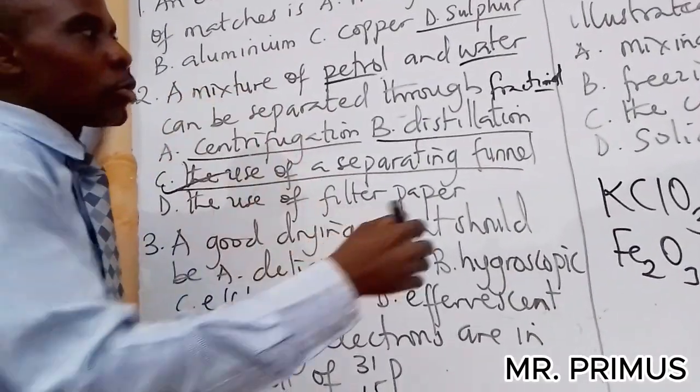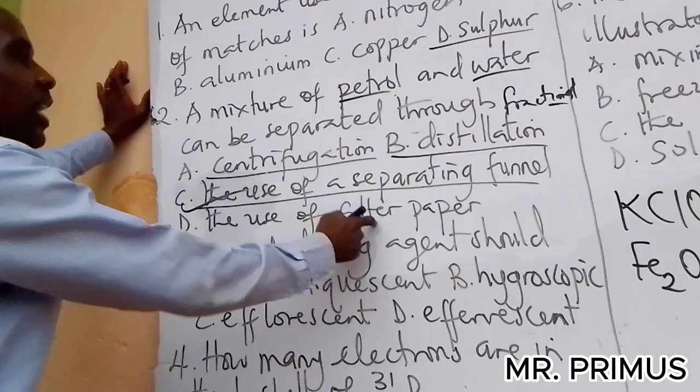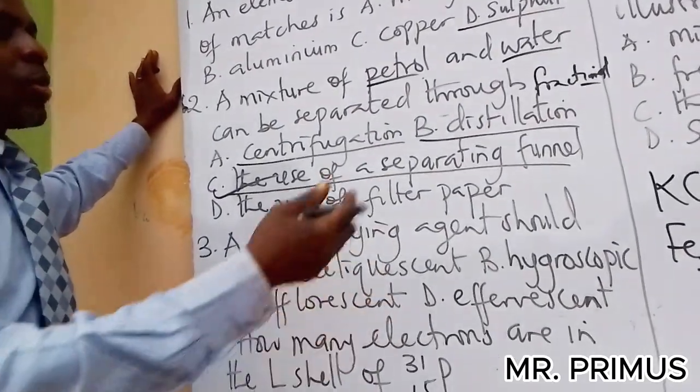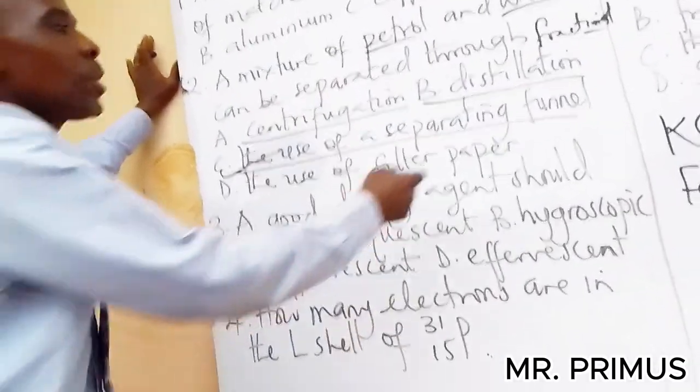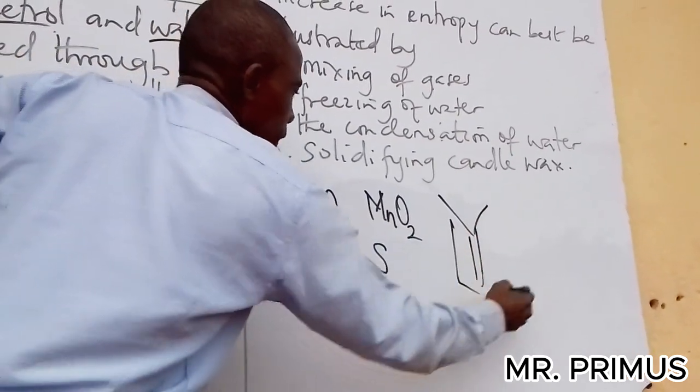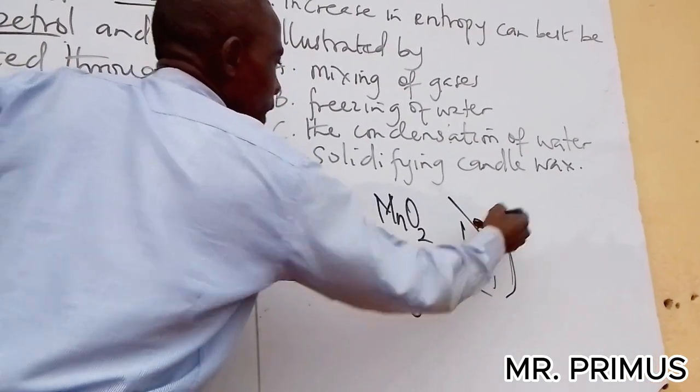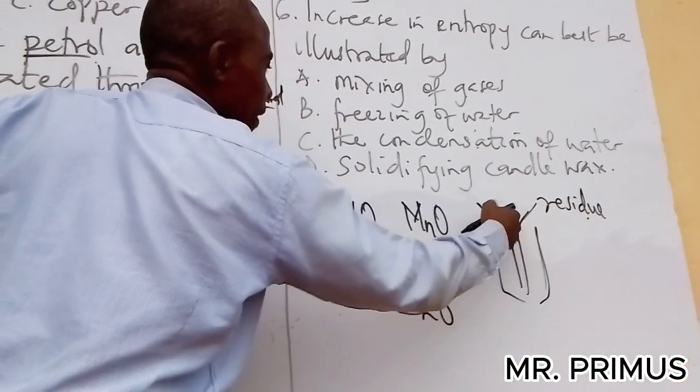We talk of distilled water, that is distillation. But if like a mixture of water and ethanol that have close boiling points, you use fractional distillation. Now the use of filter paper is just when you have a solid and a liquid. So when you use filter paper, let me show them, when you use filter paper like this...